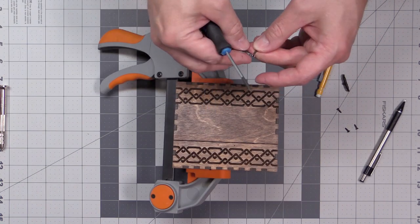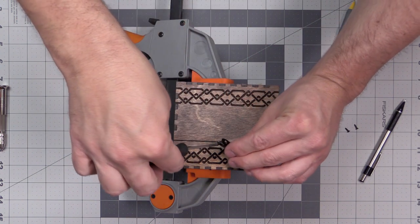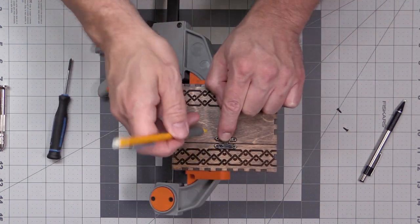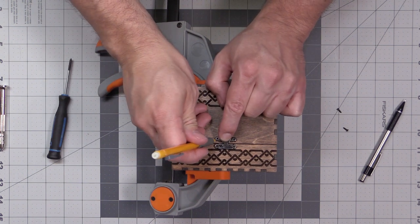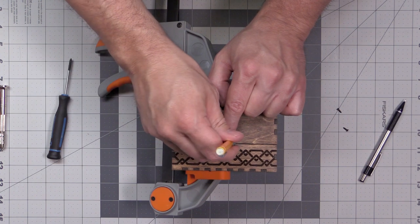Once the top section of the hasp has been installed, I'm going to line up the bottom section of the hasp and trace out the screw holes with the pencil.